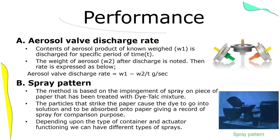Performance test — Aerosol valve discharge rate: contents of aerosol product of known weight W1 are discharged for a specific period of time T; the weight W2 after discharge is noted. Discharge rate = (W1 − W2) / T, measured in grams per second. Spray pattern: the method is based on impingement of spray on a piece of paper treated with a dye-talc mixture; particles that strike the paper cause the dye to go into solution and be absorbed onto the paper, giving a record of the spray pattern for comparison.